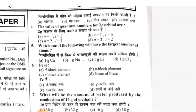The value of quantum number for the 2P orbital: N equals 1, L equals 0. The answer will be B. Which of the following will have the largest number of atoms? The answer will be 1g lithium. Answer is C.